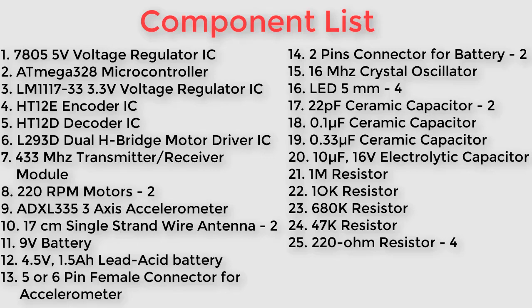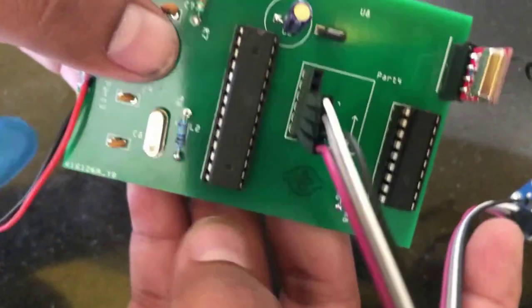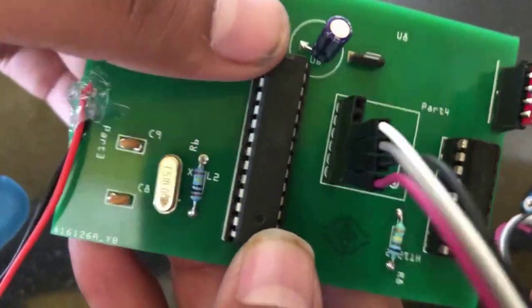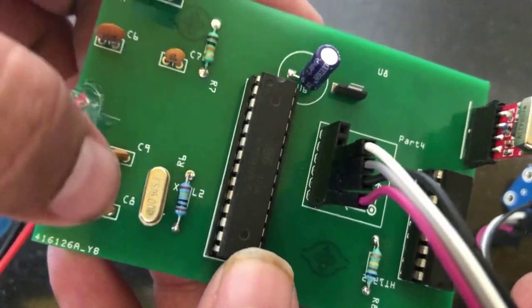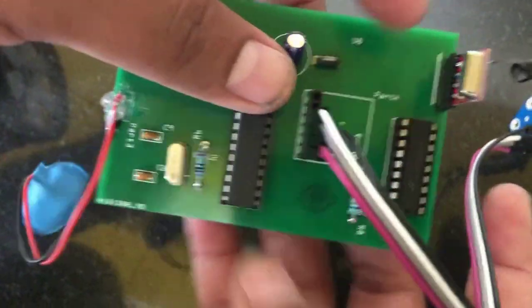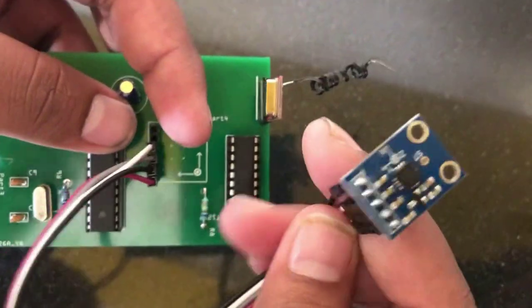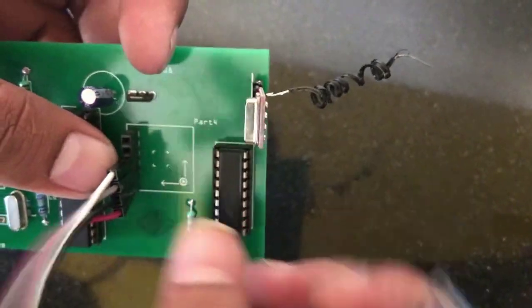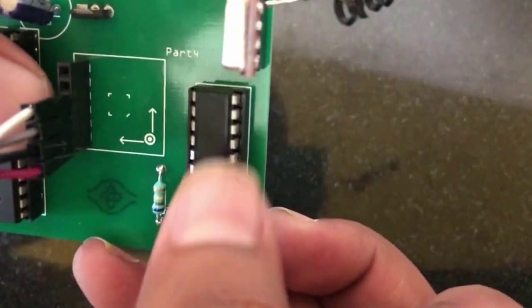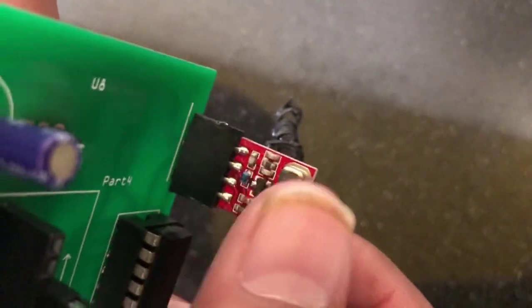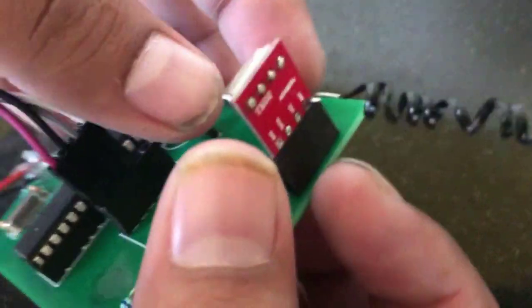I have soldered all the required components on PCB. This is the transmitter section - we have ATmega328 microcontroller, 7805 voltage regulator IC, ADXL335 3-axis accelerometer, encoder IC HT12E, and transmitter of 433 MHz RF module.